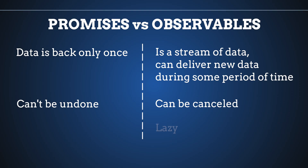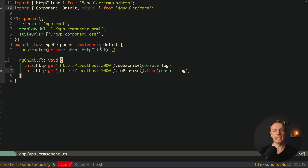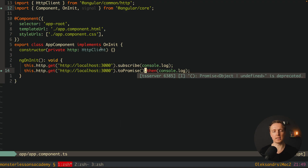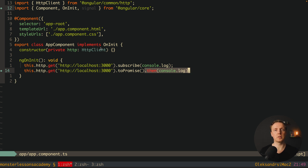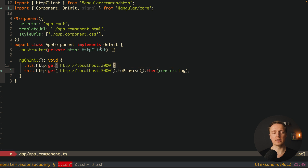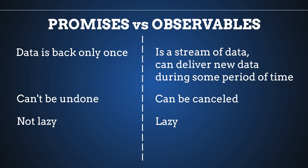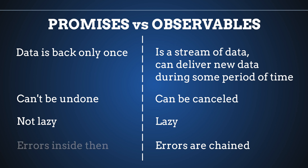The last two differences are that observables are lazy and promises are not. If we create a promise without .then or any child promises, it will still be executed. But if we write an observable without subscribe, it won't be executed because it is lazy. The last difference is error handling: when we have errors inside observables, we get them inside our subscribe method. With a promise, we get errors inside .then or inside a child promise.